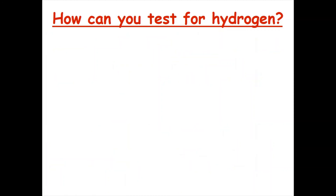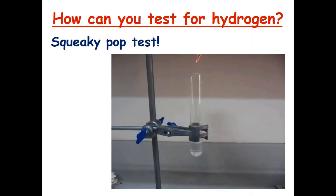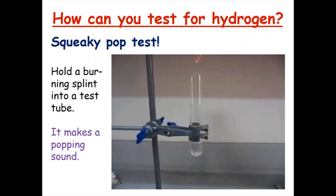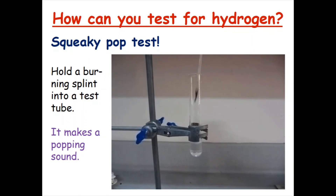Now we are going to look at the last bit, which is how you can test for hydrogen. The test for hydrogen is called the squeaky pop test. What you have to do is hold a burning splint into a test tube, and if hydrogen is present you will hear a popping sound — and that is the test for hydrogen.